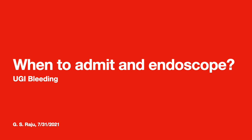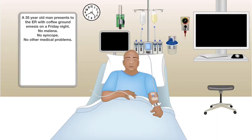Greetings. Let us talk about an important concept in managing a patient with upper GI bleeding. Here is a 35-year-old gentleman who presents to the emergency room with coffee ground emesis on a Friday night. No history of melena or syncope, and no other medical problems, and he does not take any medications.